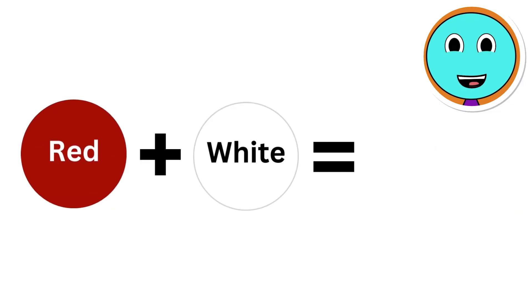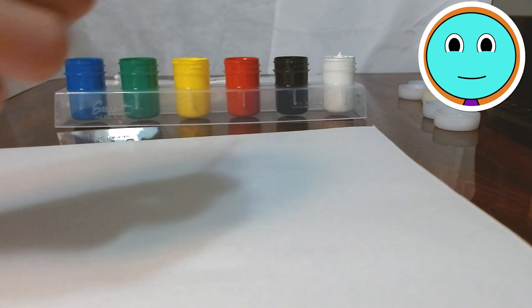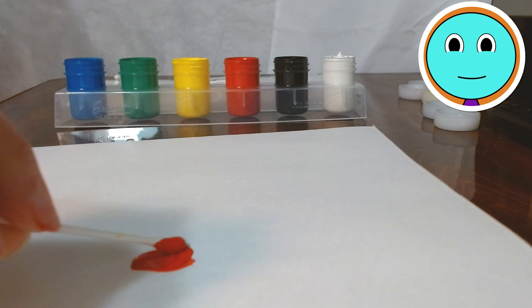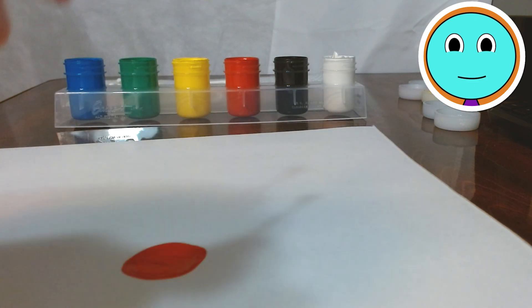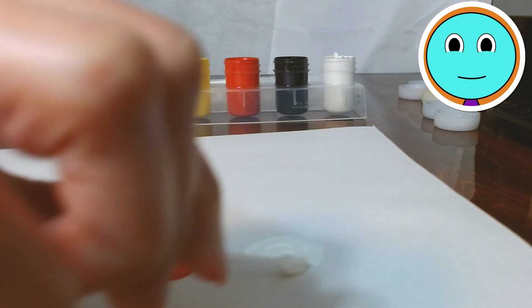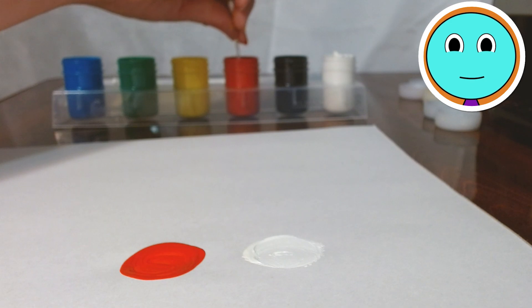What about red and white? What color does that make? Hmm. Let's think. Pink! Right! Great job! Let's see our friend mix the red and white. There's the red paint. There's a little white paint. Now it's time to mix them.